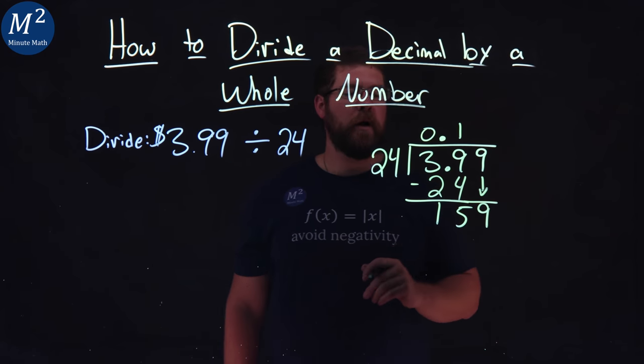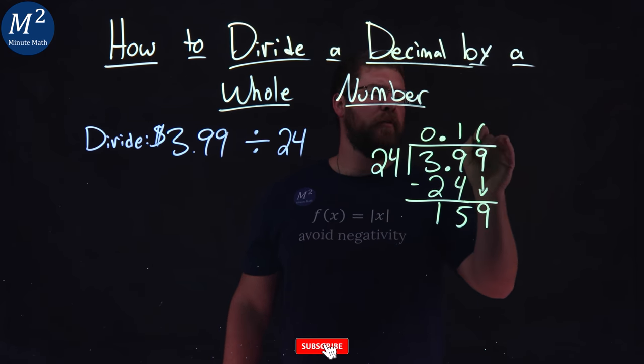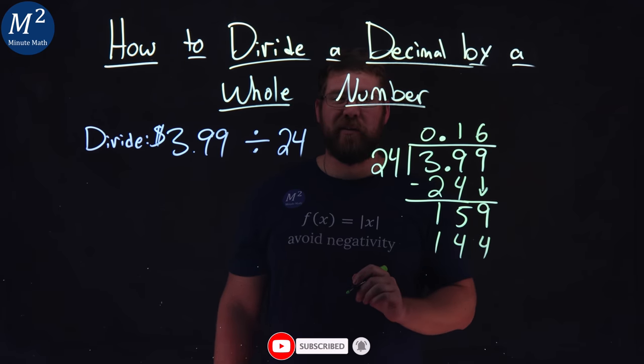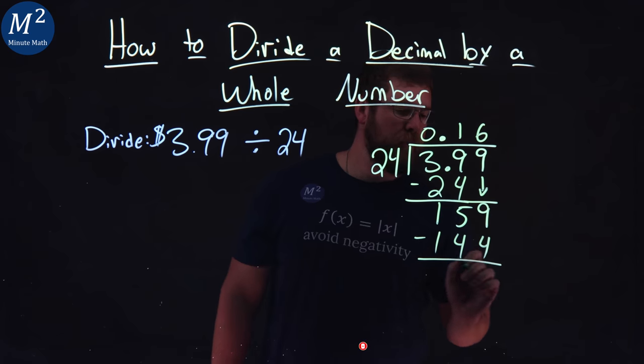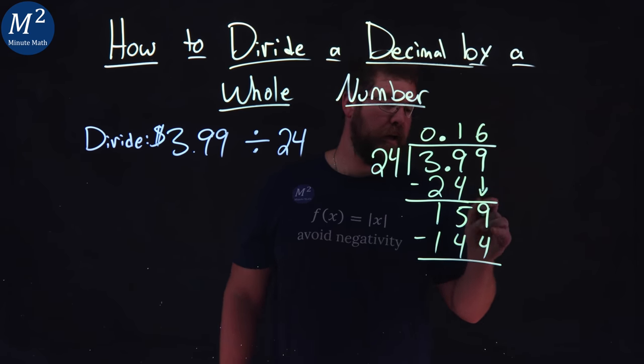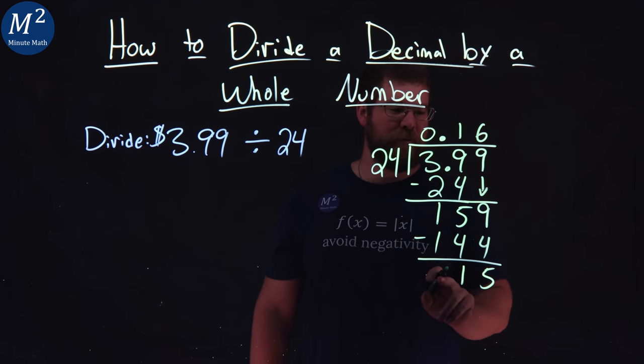Now, can 24 go into 159? And the answer is not evenly, but if we multiply it by 6, we get 144, and we get pretty close. Subtract the two numbers here. 9 minus 4 comes out to be 5 again. And 5 minus 4 is 1. 1 minus 1 is 0. We don't need that.